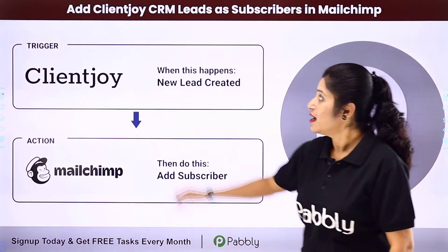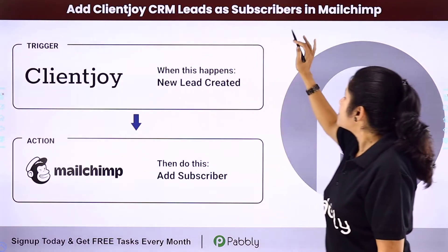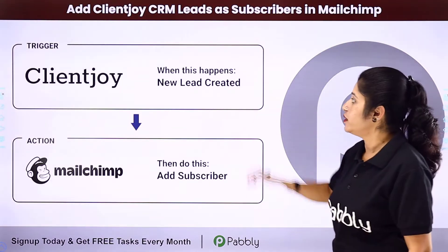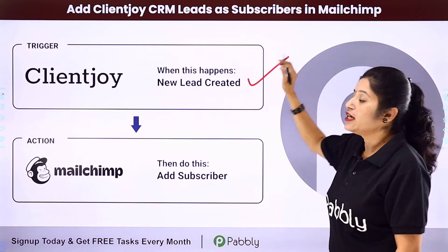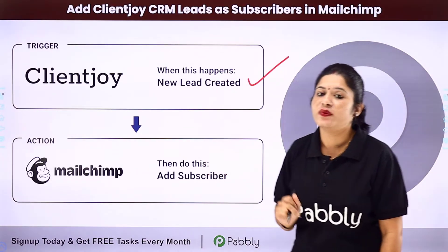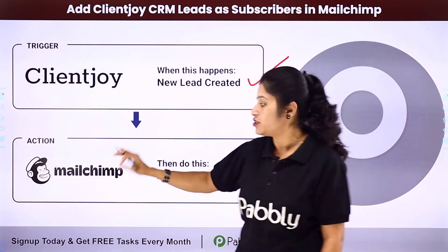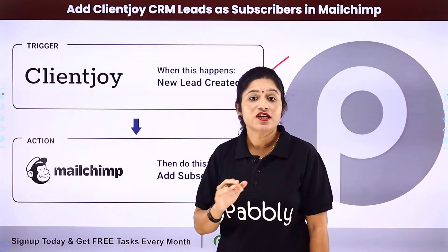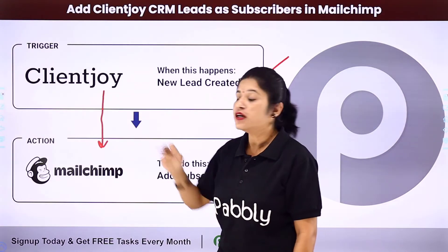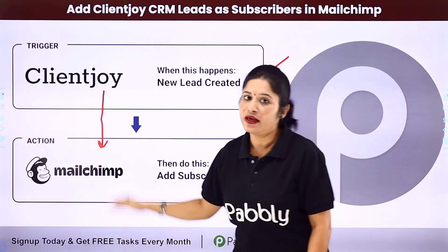In this video we are going to learn how you can add ClientJoy CRM leads as subscribers in Mailchimp. The idea is that whenever you create a new lead in your ClientJoy CRM application, automatically the same lead details should be added as a new subscriber to your email marketing platform, Mailchimp. For that you need to integrate your ClientJoy account with Mailchimp. ClientJoy will be your trigger application and Mailchimp will be your action application.